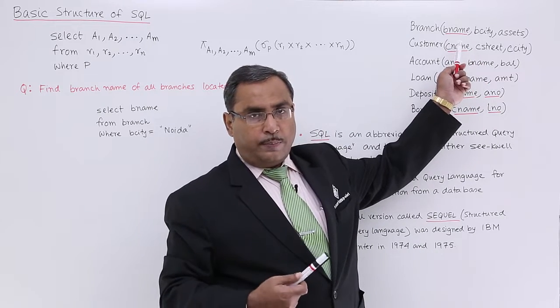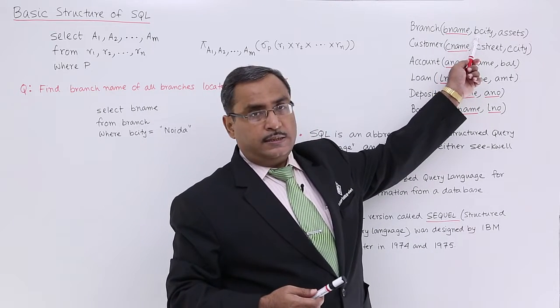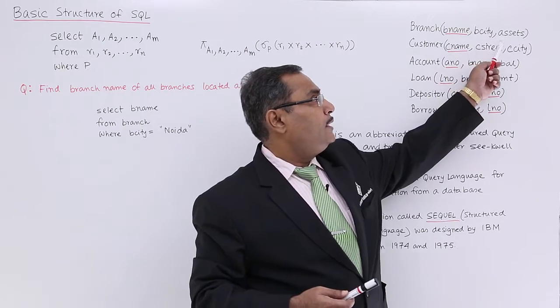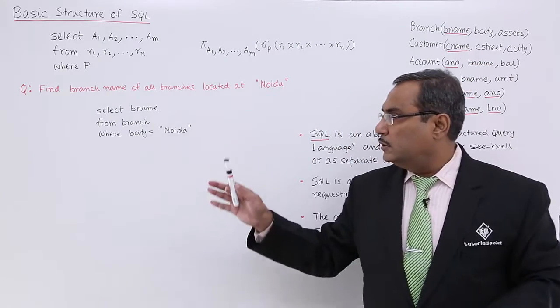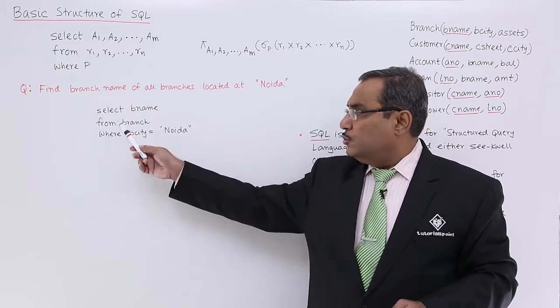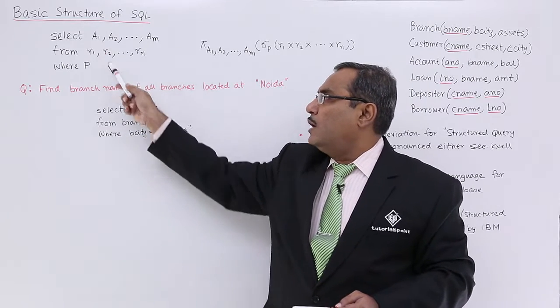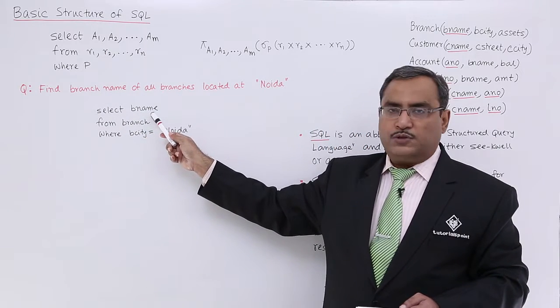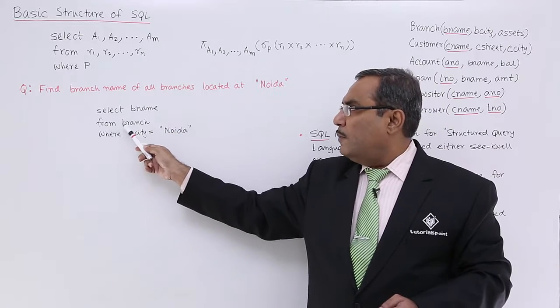I require to get all the branch names in the city—say branch_city will be Noida—and assets are not getting extracted here. Here we have written SELECT branch_name.